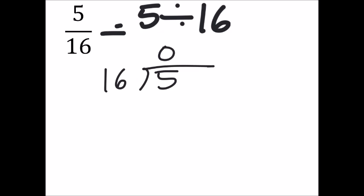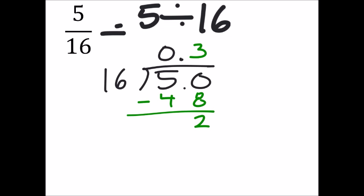Now 16 won't go into 5, and that's okay. We can make that a 50. How many times does 16 go into 50? It should be 3 times, giving us 48. So I'll subtract this, and I got 2, which means I need another 0.